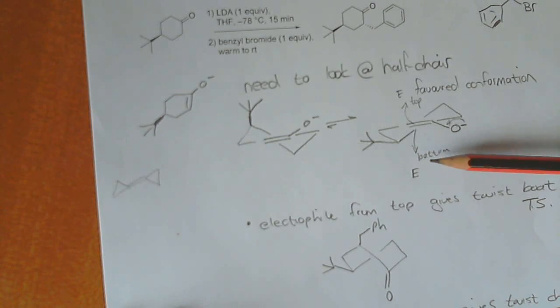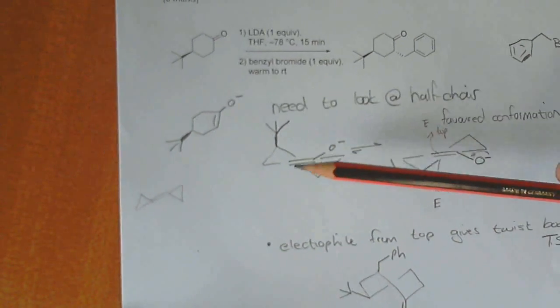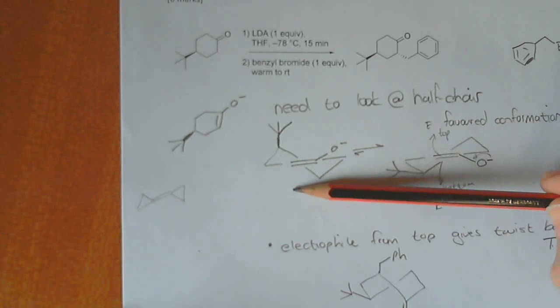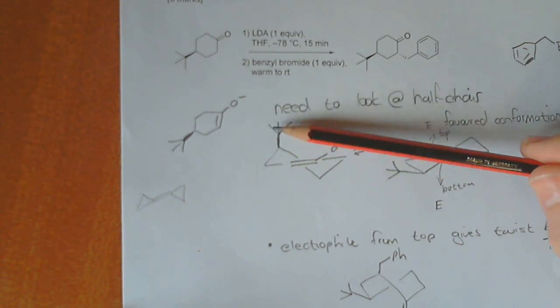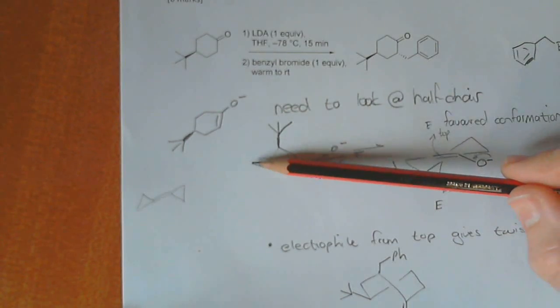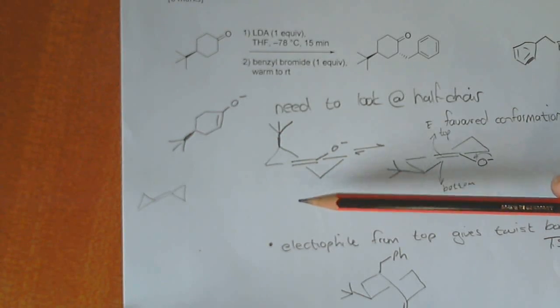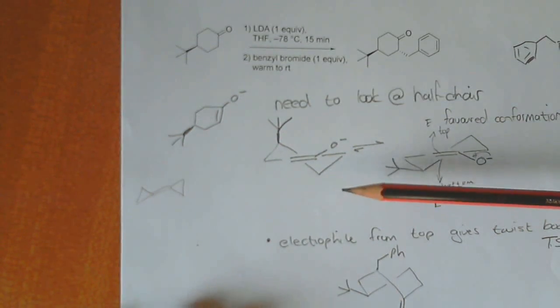Don't get confused by this now and just say that whenever it comes in from the bottom, it's going to give a twist chair. That's not what's happening here. It depends on the particular conformation of this because on this one over here, if it came in from the bottom, it would give the twist boat. So if this was a different chiral center and it was now pointing down there, then it would look different. So you have to recognize that. You must be able to do that.